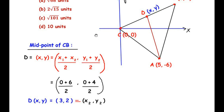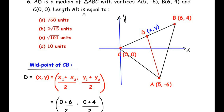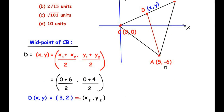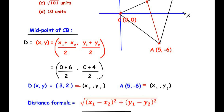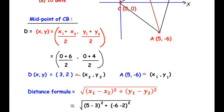We now need to find the length AD using the distance formula. We consider A(5, -6) as (x1, y1) and D(3, 2) as (x2, y2). The distance formula is √[(x1 - x2)² + (y1 - y2)²]. Substituting: x1 = 5, x2 = 3, y1 = -6, y2 = 2. So we get 5 - 3 = 2, and -6 - 2 = -8.